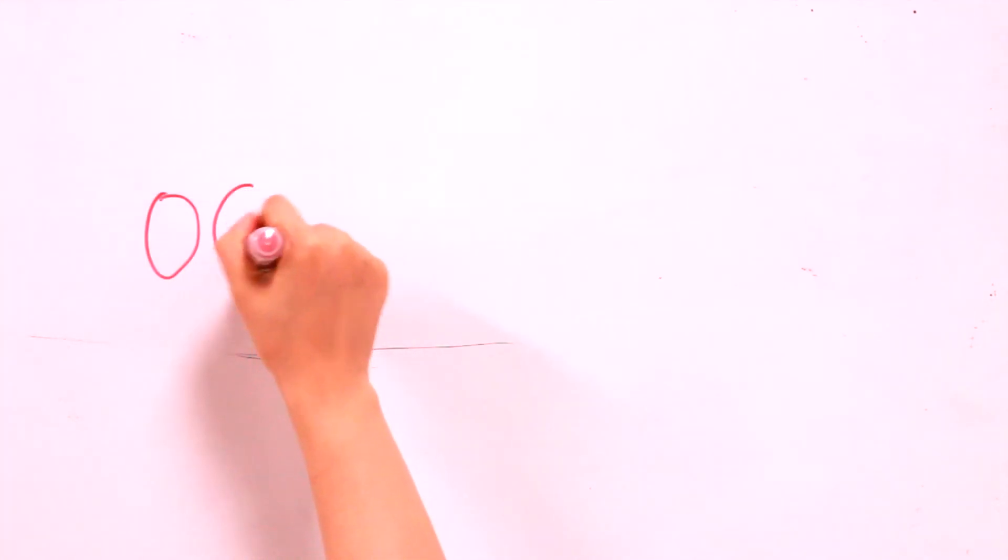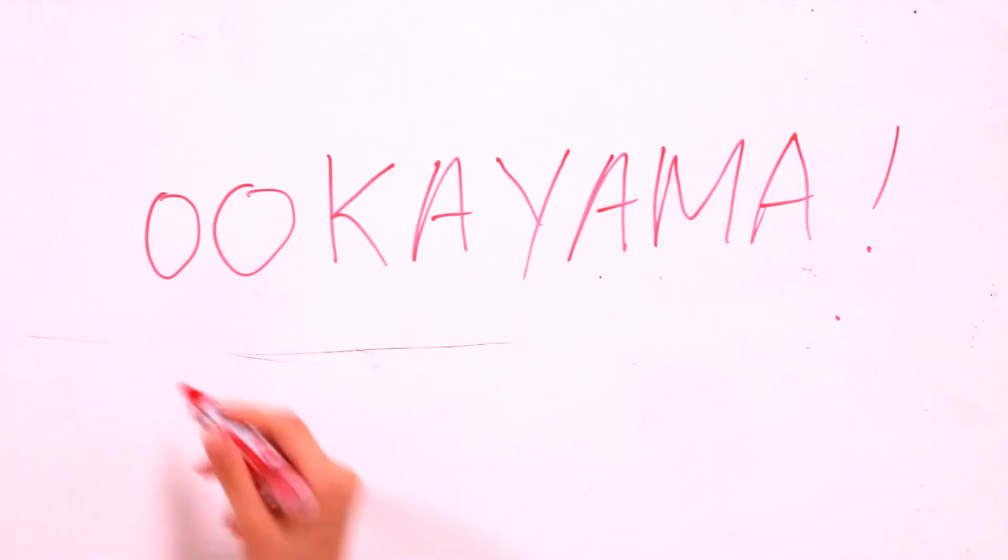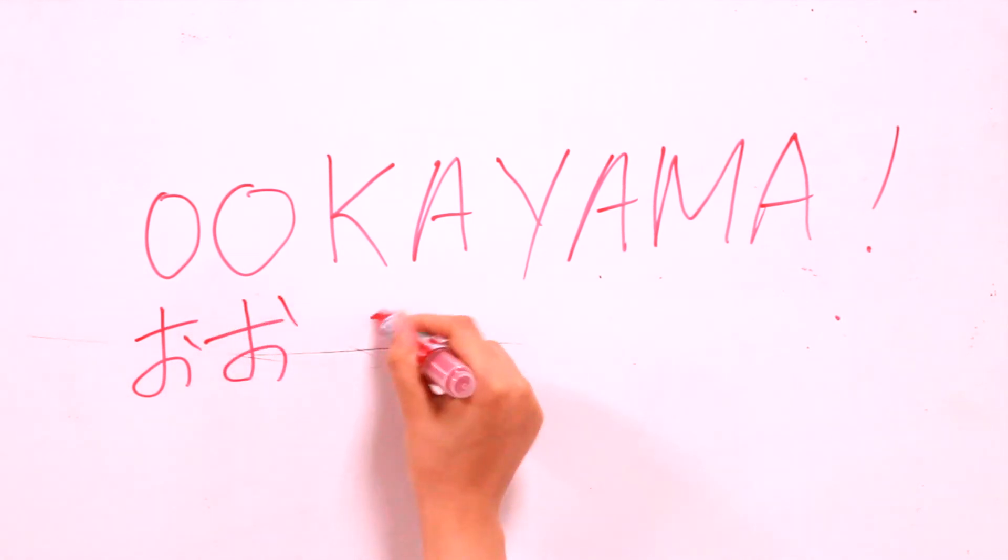3. Every syllable is pronounced. Even double letters are pronounced, elongating the sound. For example, in this train station name オオカヤマ オオカヤマ